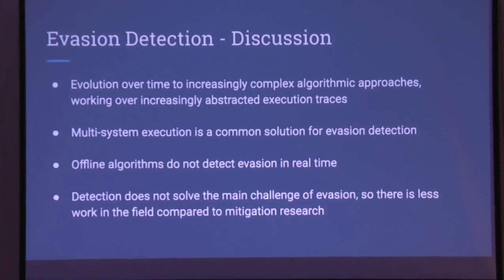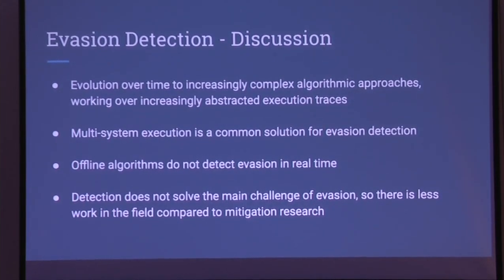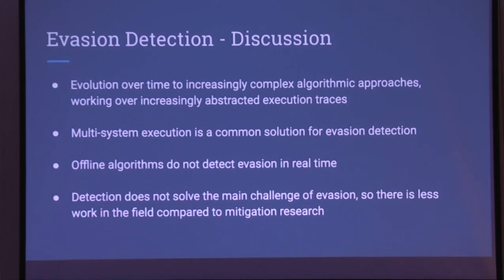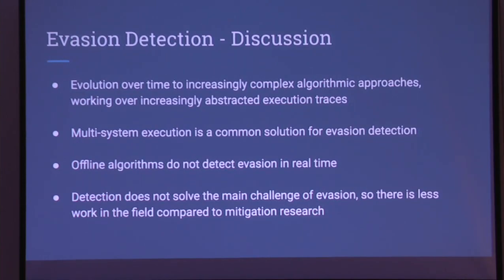We see this evolution towards increasingly complex algorithmic approaches working on increasingly abstracted execution traces — from Jaccard distances to bioinformatics-inspired protein alignment to text-similarity-inspired algorithms. Multi-system execution is a very common solution in evasion detection, and all these algorithms are offline. This doesn't solve the real-time problem: if you're protecting a network and get a malicious email attachment, you don't want to know five or six minutes later whether it was evasive — you need an answer in seconds.